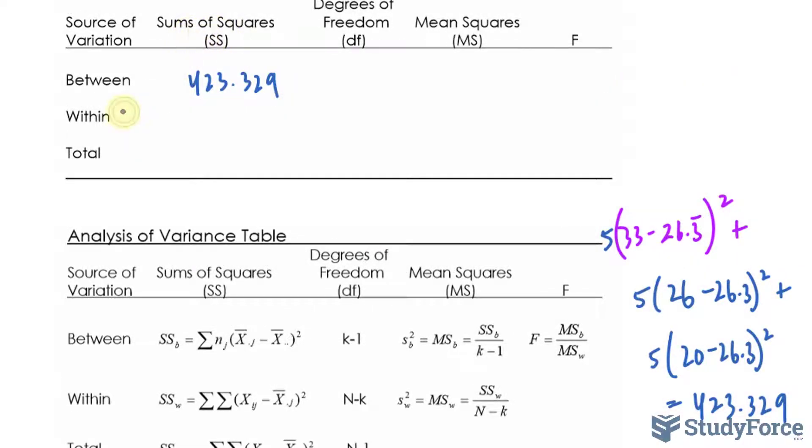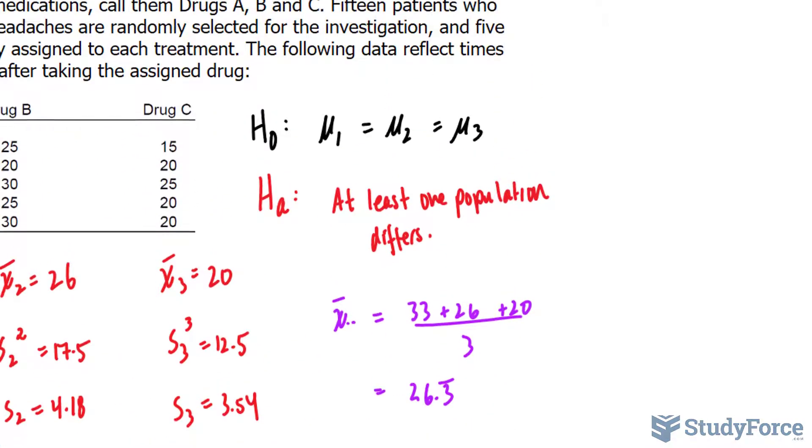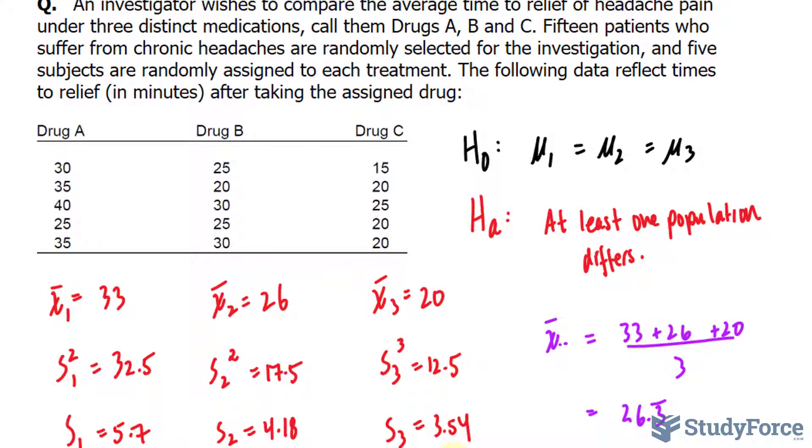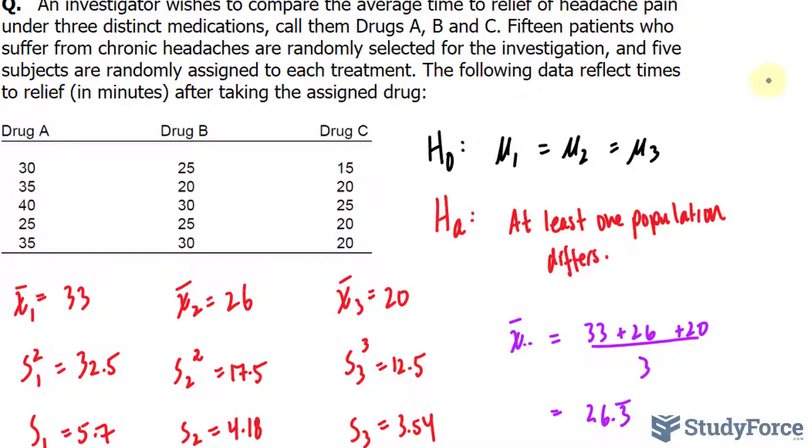Now we'll go ahead and find out the sum of squares within. For this, you have to do the exact same thing, except for the individual groups and their data. So starting with, let's say, drug A. We will take the average of drug A, which was 33, and subtract it from 30, like this. 30 minus 33 raised to the power of 2, plus 35 minus 33 raised to the power of 2. 40 minus 33 raised to the power of 2. And you keep doing this.